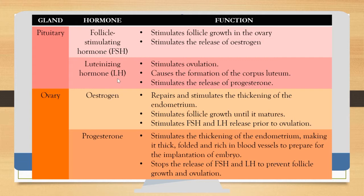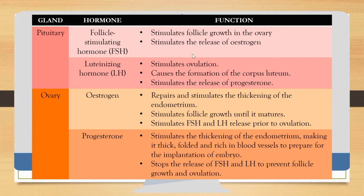The second hormone is Luteinizing Hormone (LH), which stimulates ovulation — the release of the secondary oocyte from the Graafian follicle into the fallopian tube. LH also causes the formation of the corpus luteum after ovulation, as the Graafian follicle transforms into the corpus luteum, and stimulates the release of progesterone.